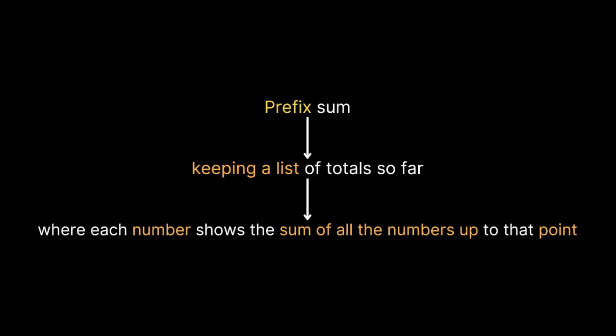So what do we mean by prefix sum or cumulative sum? Prefix sum is an efficient algorithm that helps us find the sum of a sequence of numbers. It works by keeping a list of totals so far, where each number shows the sum of all the numbers up to that point. Let's take an example.